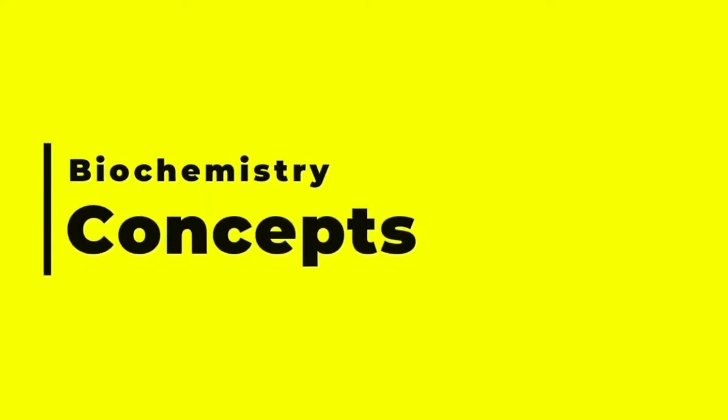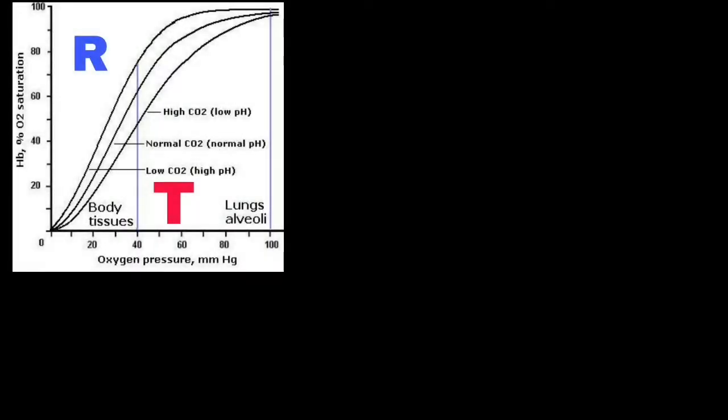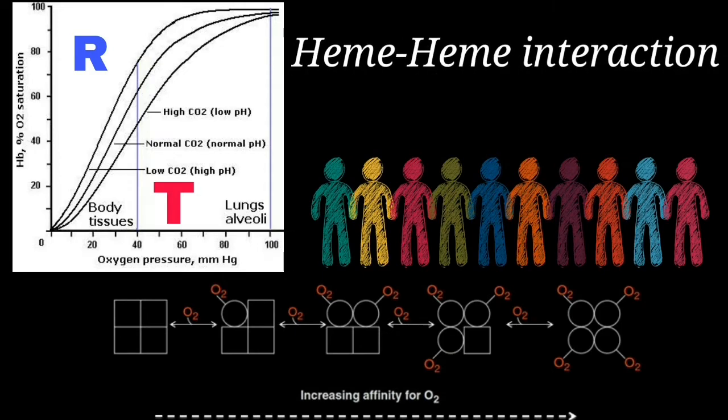Hello everyone. Welcome to my channel Biochemistry Concepts. The sigmoid shape of oxygen dissociation curve of hemoglobin is due to heme-heme interaction or cooperativity.